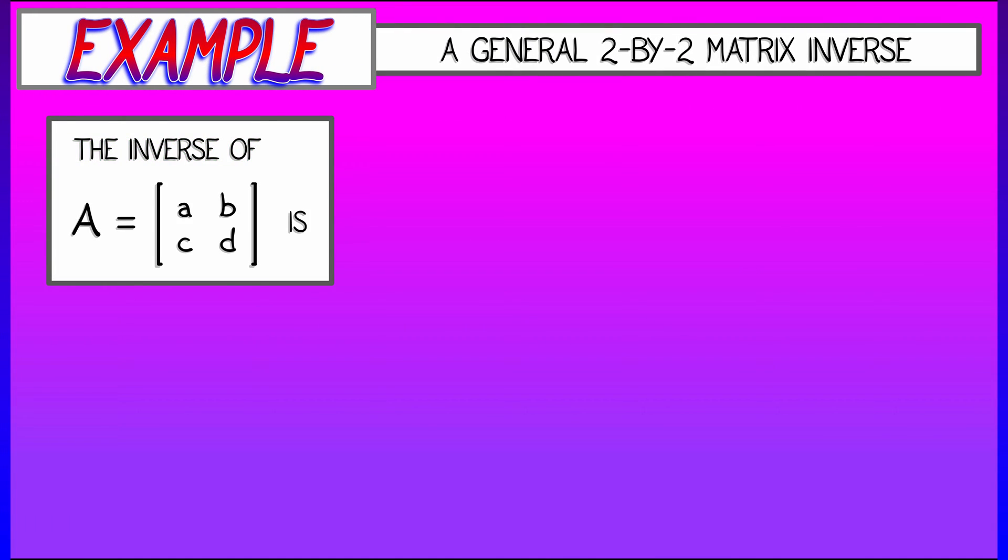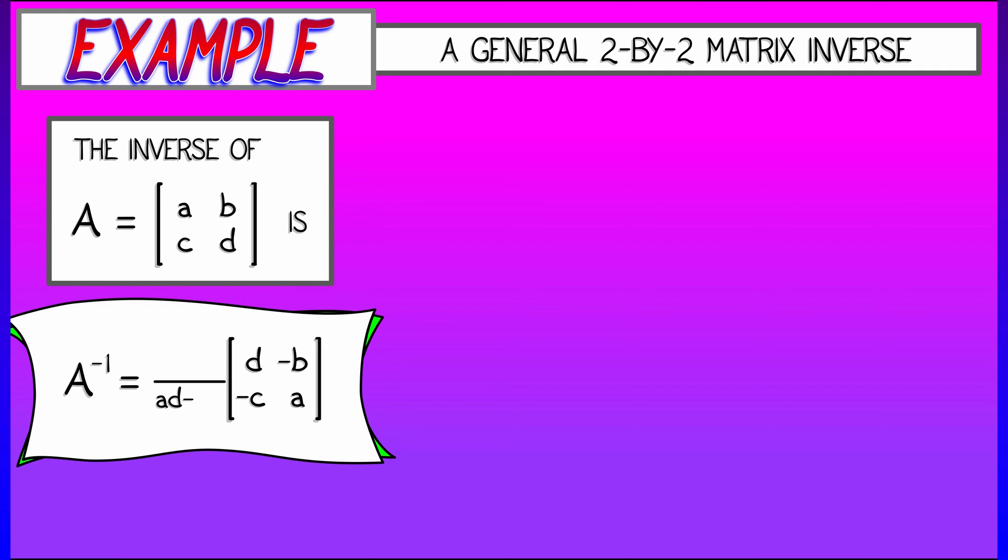Here's an example of a general inverse formula for 2x2 matrices. This is important. You're going to want to know this. The inverse of the 2x2 matrix ABCD is D, minus B, minus C, A with every term divided by quantity AD minus BC. That's a lot of symbols to put in your head, and you gotta put it in your head. This one is so important. You've got to memorize this formula. We're going to use it all the time.